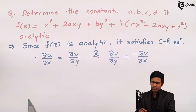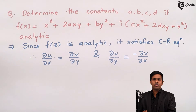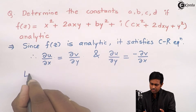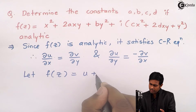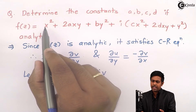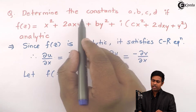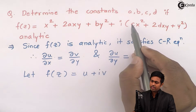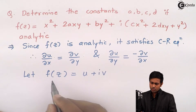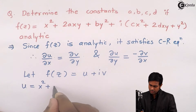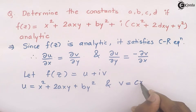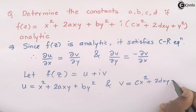First, what is u and what is v? In f of z, the real part is u and the imaginary part is v. So let f of z equal u plus iv. Therefore the real part is u = x² + 2axy + by², and the imaginary part is v = cx² + 2dxy + y².